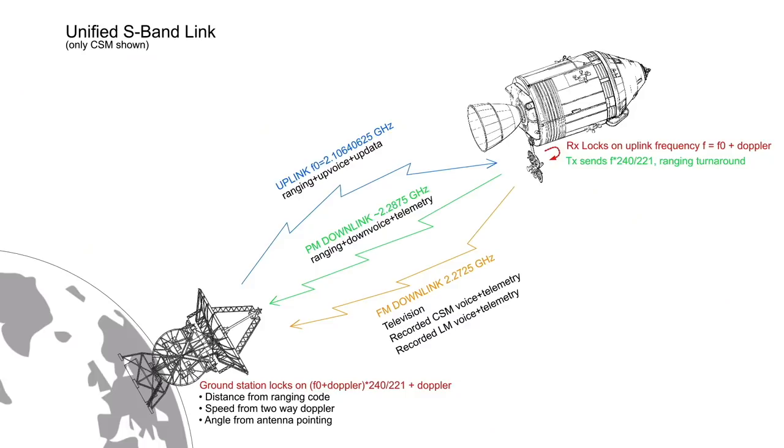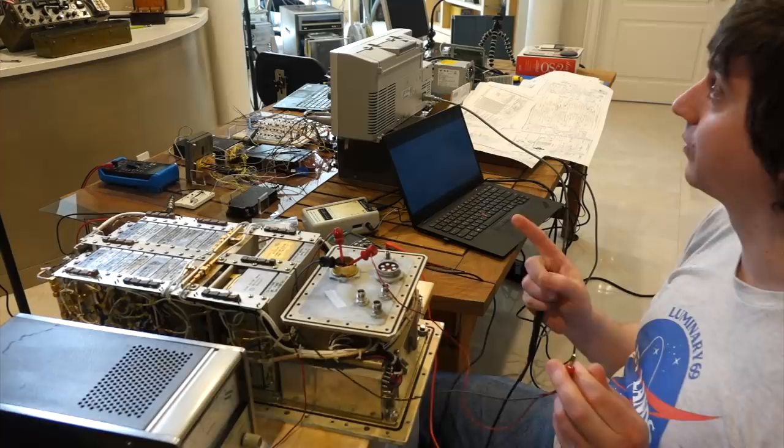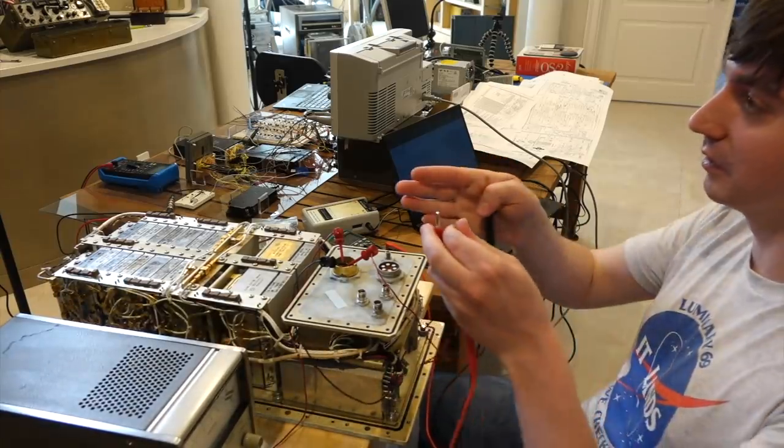We explained how the S-band system works and looked at the innards of the power amplifier and the transponder in episodes 1 to 3. We then started our transponder power-up preparations in episode 4.